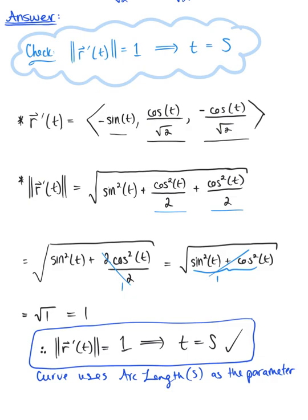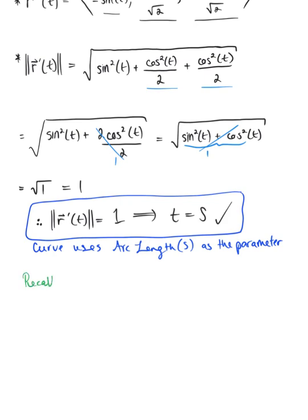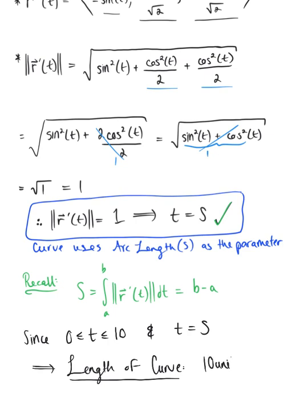Just for fun, let's take this one step further. Recall that if the arbitrary parameter is the arc length, as we have shown here, then the length of the curve from a to b is simply the length of the interval, b minus a. Since t is on [0, 10] and t is the arc length parameter, we can conclude without any further math that the length of the curve is 10 units — because that is the length of the interval. A fun little shortcut when your curve uses arc length as its parameter.